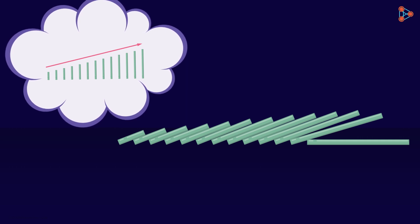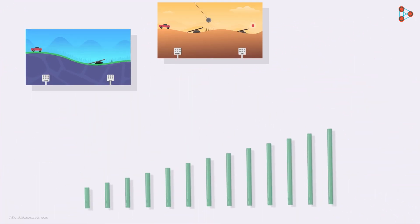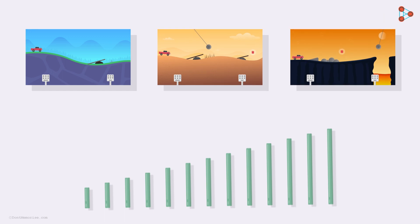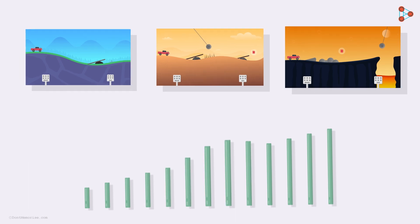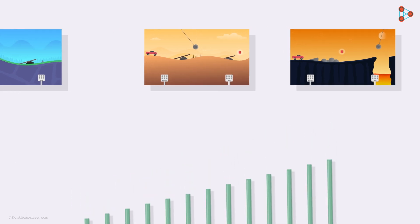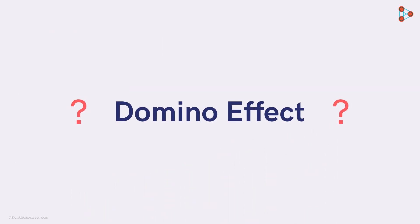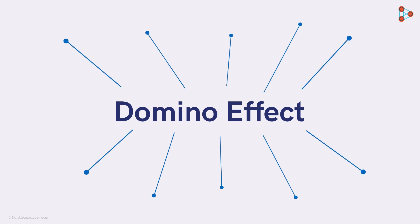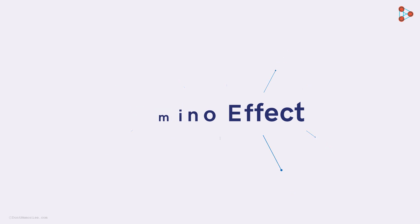So we can say that all the blocks were interconnected and every event happened sequentially. This example is just like our previous video game example — both deal with a chain of similar events being set off. The concept of domino effect can be applied in different areas. Let's have a look at how we experience the domino effect in our daily lives.